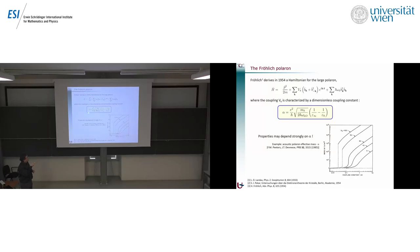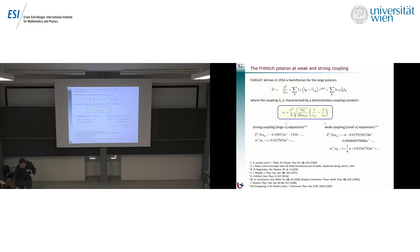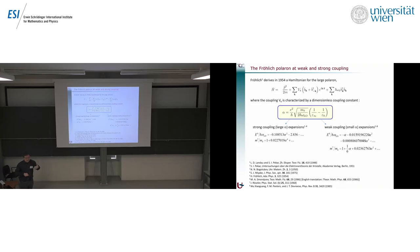The properties will depend sometimes quite strongly on this coupling strength, as you can see for the effective mass. There is clearly a weak coupling regime for small alpha that's different from a strong coupling regime. Many of the early works on the polaron were looking at these two separate regimes — expansions were made for small coupling through perturbation theory, but also there were works studying the opposite limit, the large alpha expansions. Here you can see the state-of-the-art values for the coefficients of these expansions.